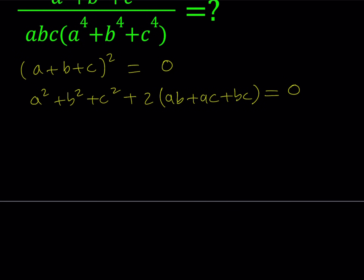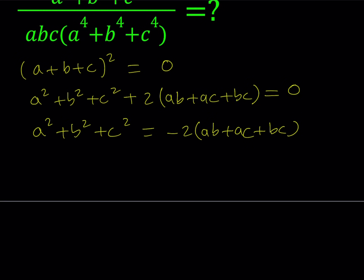Let's go ahead and isolate a squared plus b squared plus c squared from here and write it as negative 2 times the quantity ab plus ac plus bc. So this is something we're going to be using, so let's keep it at that.